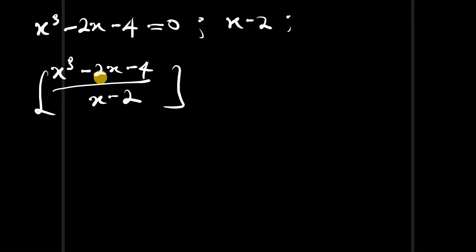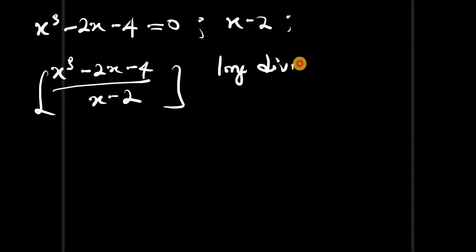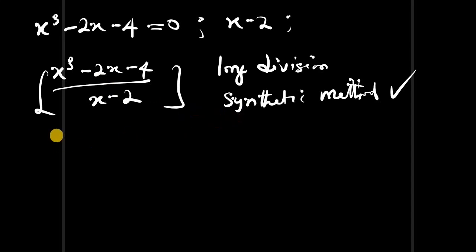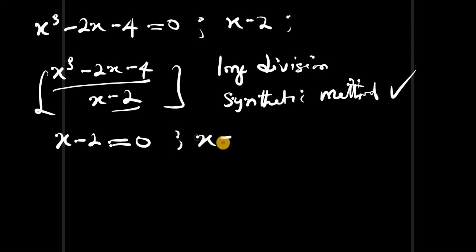There are two methods of dividing these expressions: the long division method and the synthetic method. We are going to use the synthetic method because it is quite simple and doesn't take much time. To apply the synthetic method, we equate the denominator to zero, giving x equals 2.